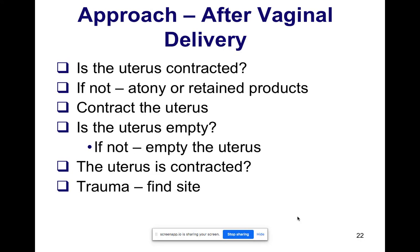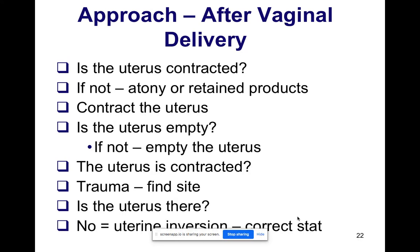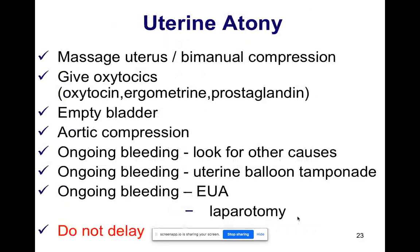If it is an atonic uterus, you need to contract the uterus — give the drugs and empty the uterus if there are still retained products. If the uterus is contracted, look for trauma: perineum, vagina, or cervical tears. If there are no tears and the patient is still bleeding, ask yourself: is the uterus palpable on abdominal examination? If not, it is likely uterine inversion and you need to correct it immediately. For uterine atony, massage the uterus, perform bimanual compression, and give all the uterotonic drugs — oxytocin, ergometrine, and syntometrine — and empty the bladder.